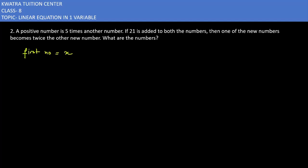And the second number, let's say it is 5x. Now you can see it says if 21 is added to both the numbers. Kya karna hai? Hame 21 dono numbers mein add karna hai. X mein bhi 21 add karo. 5x mein bhi 21 add karo.